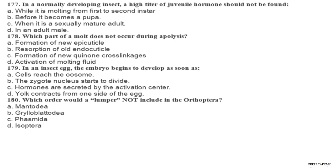Question 177. In a normally developing insect, a high titer of juvenile hormone should not be found: A while it is molting from first to second instar, B before it becomes a pupa, C when it is a sexually mature adult, D in an adult male. Question 178. Which part of a molt does not occur during apolysis? A formation of new epicuticle, B resorption of old endocuticle, C formation of new quinone cross-linkages, D activation of molting fluid. Question 179. In an insect egg, the embryo begins to develop as soon as: A cells reach the oosome, B the zygote nucleus starts to divide, C hormones are secreted by the activation center, D yolk contracts from one side of the egg.